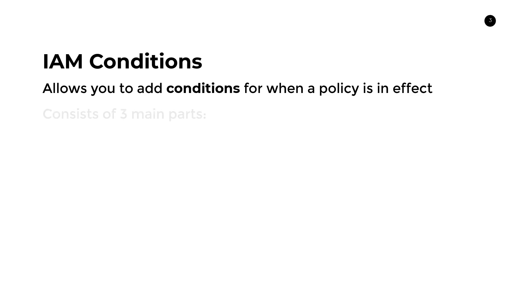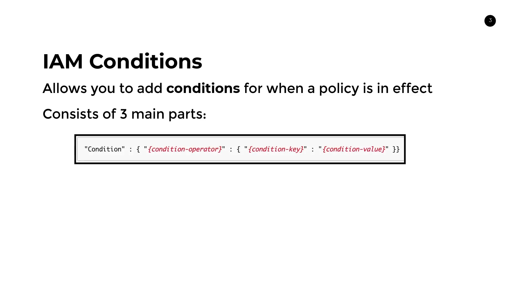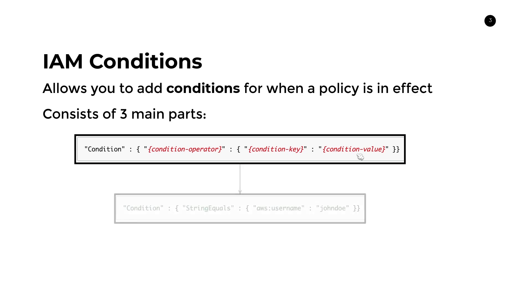A condition consists of three core parts. We have the condition key on the left-hand side, the condition operator — things like string equals, string contains, or string like — which are matching operators you use to match certain keys against certain values. Then we have the condition key, which is usually specified by AWS and is often unique to specific services. And then we have the value we're applying the filter to.